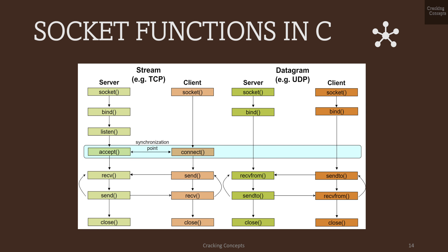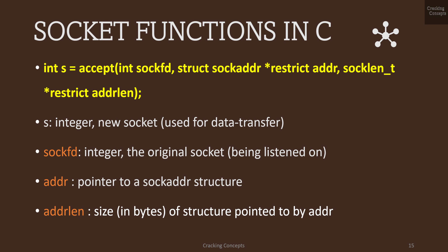The accept function runs at the server end when a request is received from the client. It takes arguments: the file descriptor, a pointer to the socket address structure, and its length. accept extracts the first connection request on the queue of pending connections for the listening socket, creates a new connected socket, and returns the new file descriptor referring to that socket.